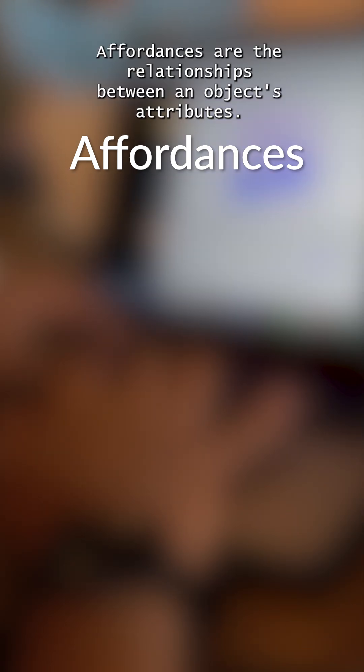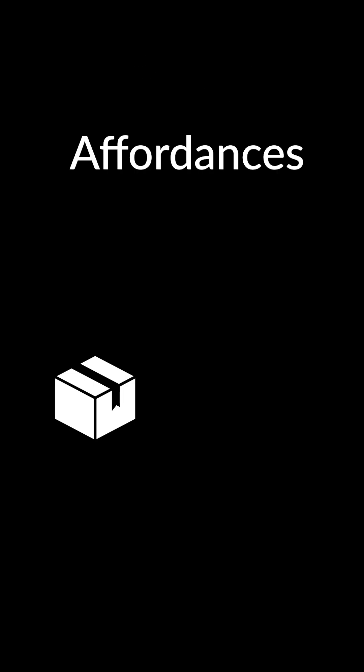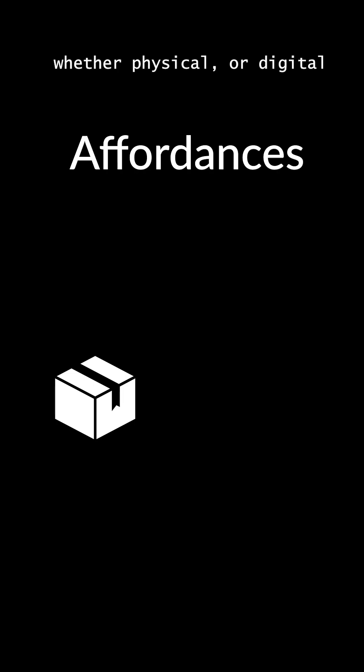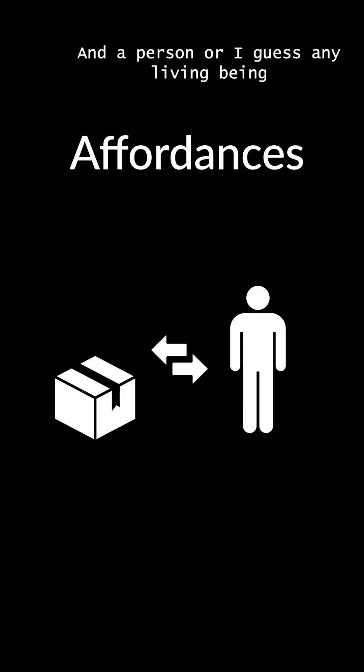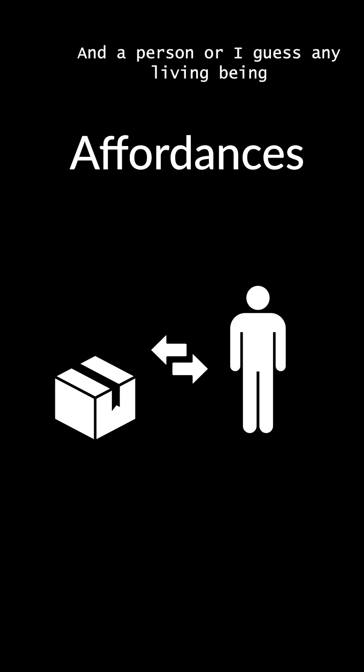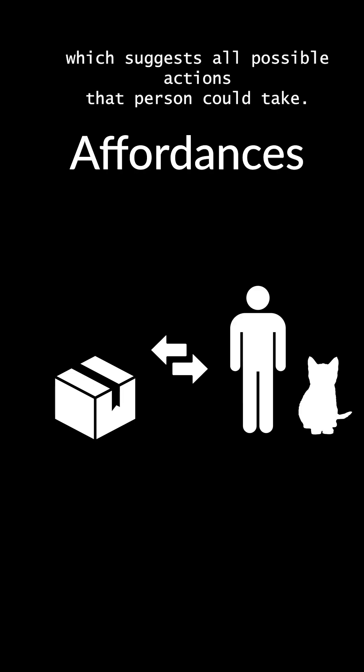In short, affordances are the relationships between an object's attributes — whether physical or digital — and a person, or any living being, which suggests all possible actions that person could take.